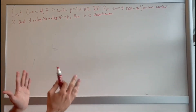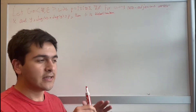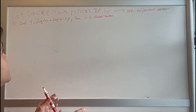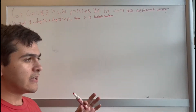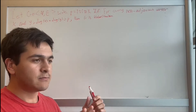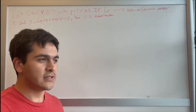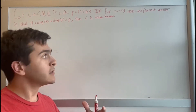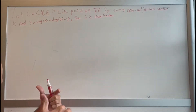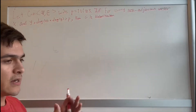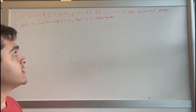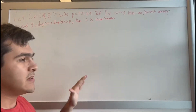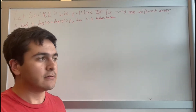This proof basically says that we have a graph with at least three vertices, and if it's true that for any pair of non-adjacent vertices x and y — vertices not directly connected — the sum of their degrees satisfies a certain equation, then the graph is Hamiltonian, meaning it has a Hamiltonian cycle. We want to prove this.